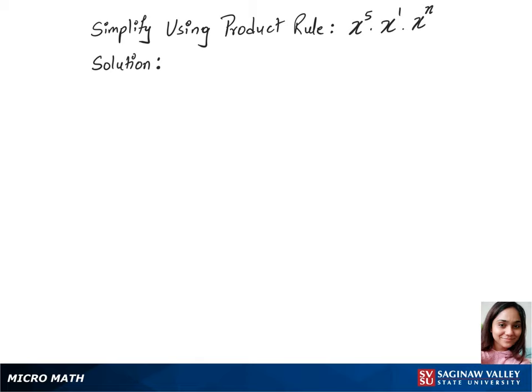To simplify x to the power 5 times x to the power 1 times x to the power n, we'll use the product rule of exponents. Here we have the same base, which is x.